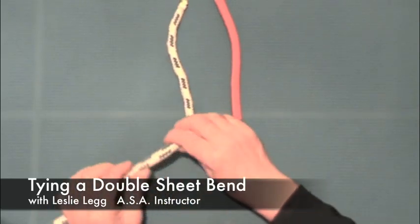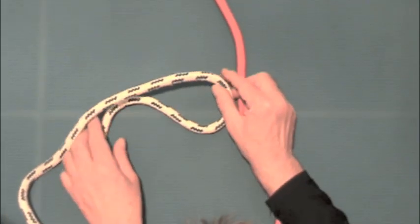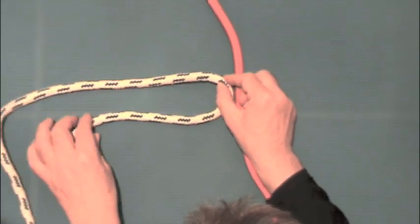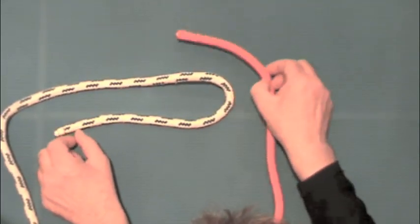Tying a double sheet bend. First, we make a bight using the white and blue line. A bight is like a half loop.